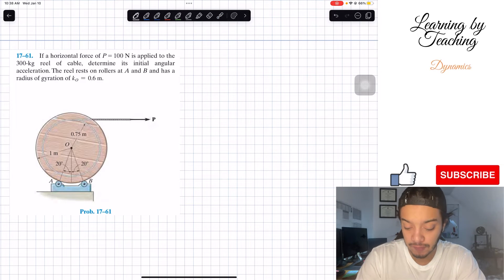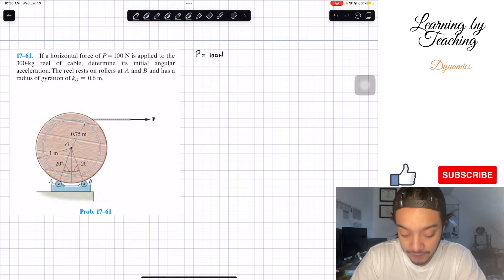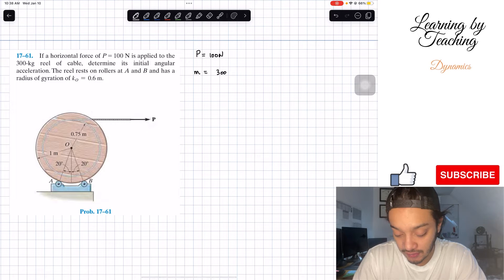Like always, I like to start by writing out our givens. Our first given is that our force P is equal to 100 N. Then our mass of our rail is equal to 300 kg. And last, we have our radius of gyration at point O equal to 0.6 m.